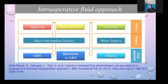Several studies suggest that in low-risk patients undergoing minor to intermediate-risk surgeries, liberal strategies may be preferable, as they reduce postoperative complications such as nausea, vomiting, and dizziness, and help in early recovery. Many studies also demonstrate that a restrictive approach in major surgeries improves outcomes by decreasing hospital length of stay, reducing anastomotic leakage due to bowel edema, and lowering surgical site infection rates.